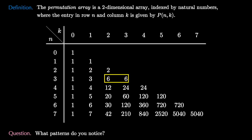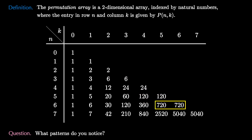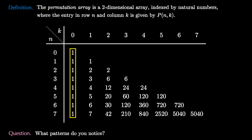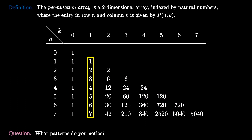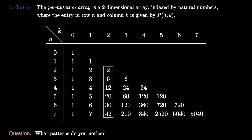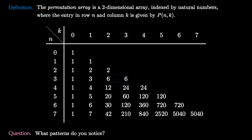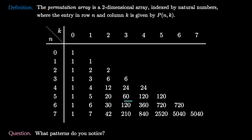What patterns do you notice in this array? The first thing I notice is that the last two entries in every row always match. Can you prove this using the formula or some other method? Can you show that all the entries in column 0 will be 1s, and that all the entries in column 1 will be the counting numbers? Can you find a formula for the entries in column 2?